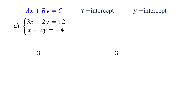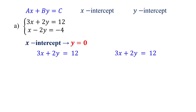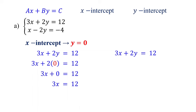Let's begin with the first equation. The x-intercept occurs when y is 0, so replace y with 0 and solve for x. 2 times 0 equals 0, so we are left with 3x equals 12. To isolate x, divide both sides of the equation by 3. Cancel out the 3s. 12 divided by 3 is 4. Therefore, the x-intercept of the first equation is (4, 0).